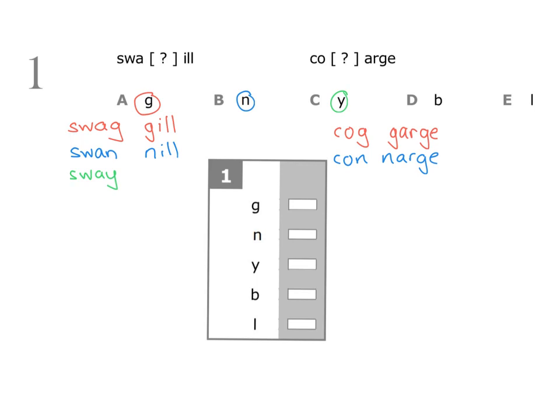S-W-A-Y: this is a word — 'sway', the trees will sway in the wind. Taking 'ill' and adding Y at the front is actually a word — it's a Scottish word meaning ale, as in the drink. On the right hand side, taking 'co' and adding Y gives 'coy' — it irritates me when my niece acts all coy. Taking 'arge' and adding Y at the front is not a word, so we move on.